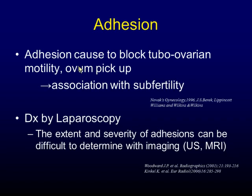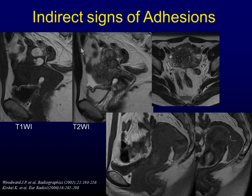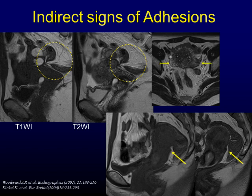Adhesion associated with endometriosis tends to block tubo-ovarian motility and prevent the ovum from being picked up. This phenomenon leads to subfertility or infertility. Since evaluation of adhesion using ultrasound and MRI is not easy, the diagnosis is made by laparoscopy. Although adhesion is sometimes difficult to detect by MRI, several indirect signs are known: anterior retraction of the rectal wall, elevation of the posterior vaginal fornix, posterior displacement of the ovary and uterus, loculated fluid collection, and hydrosalpinx.